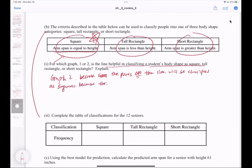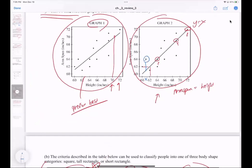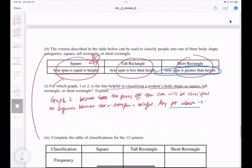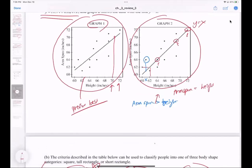Why is that? Graph one allows you to predict best at those particular x values, but graph two allows you to clearly see the number of students that actually has arm span equal to height, which in this question is called a square. So graph two is helpful in classifying students' body shape as square, tall rectangle, or short rectangle. Points on the line will be classified as square because their arm span equals height. Any point above means for that given x value, your y value is higher - your arm span is greater than the height, which is the short rectangle. Any point below the line will be classified as tall rectangle.